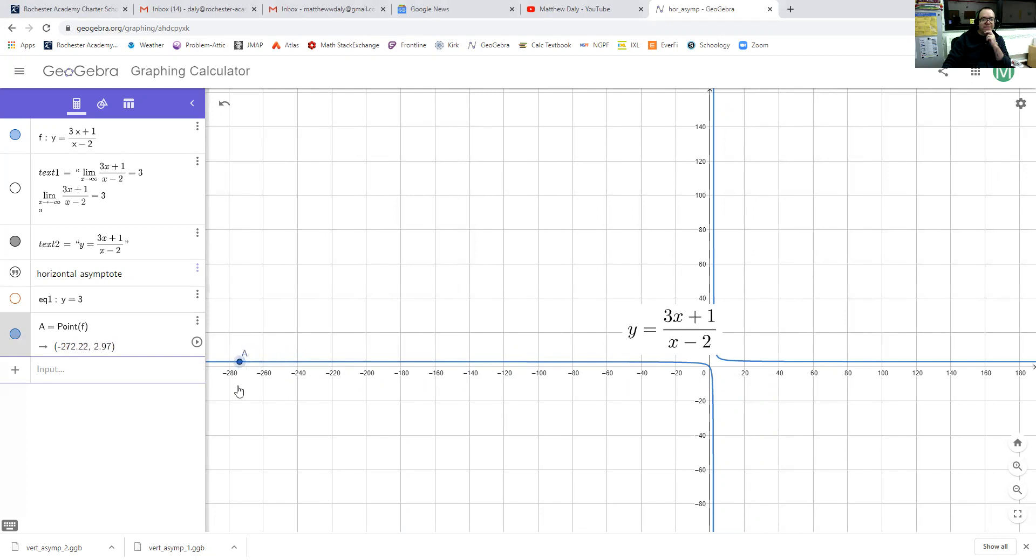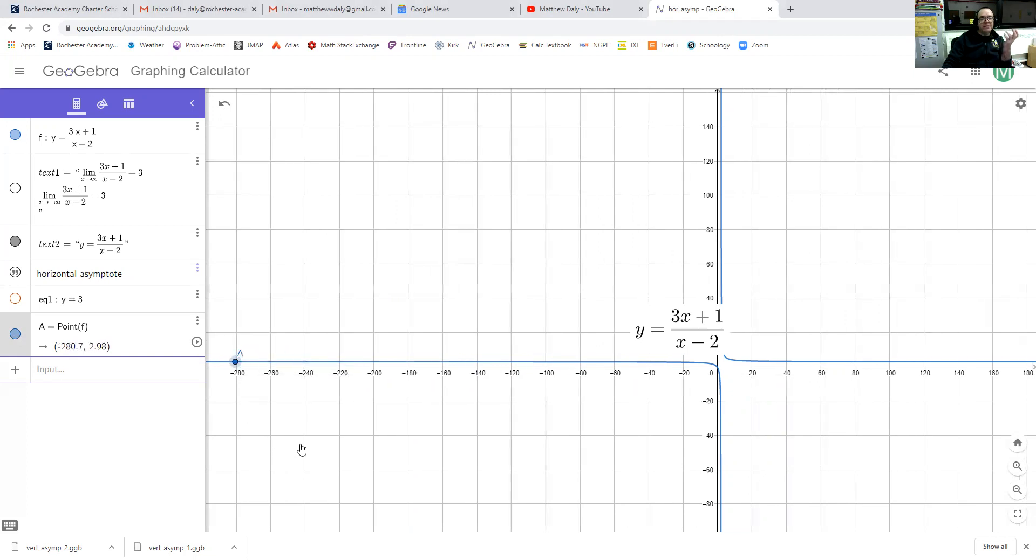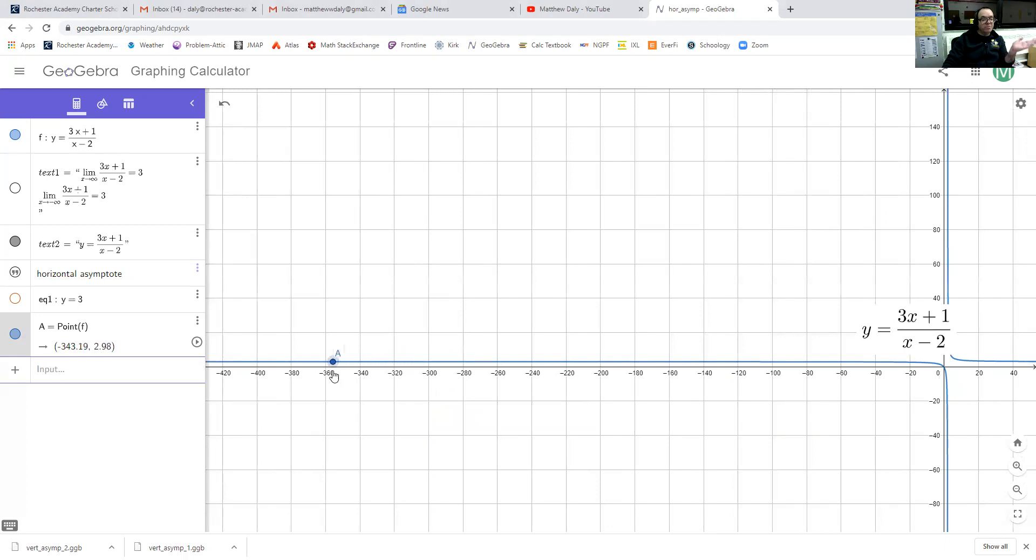2.97. So once again, this time, it's getting closer from below, but again, as we're heading off further and further to the left, it looks like our y value is getting closer and closer to 3 again.